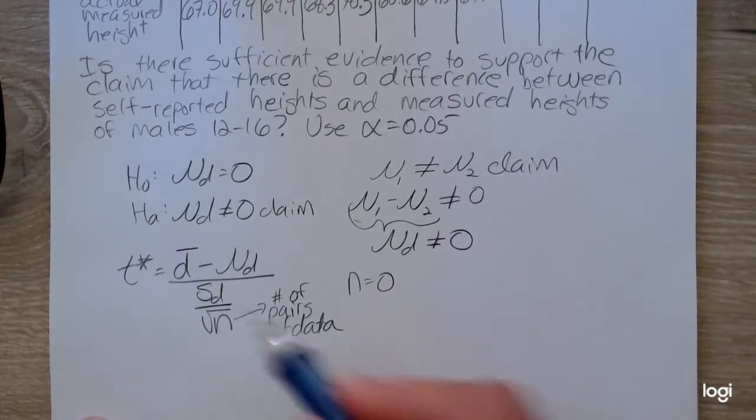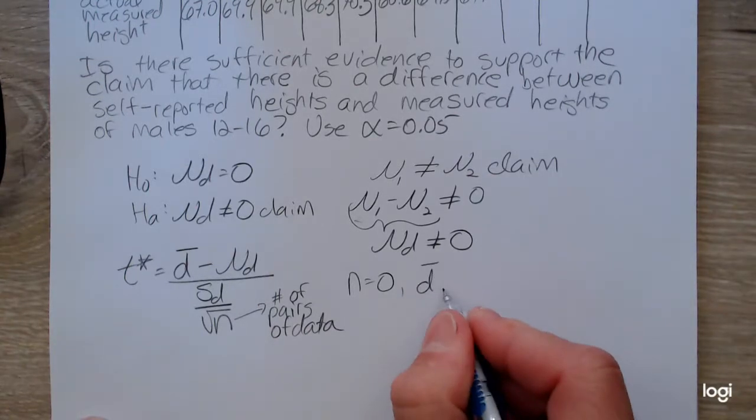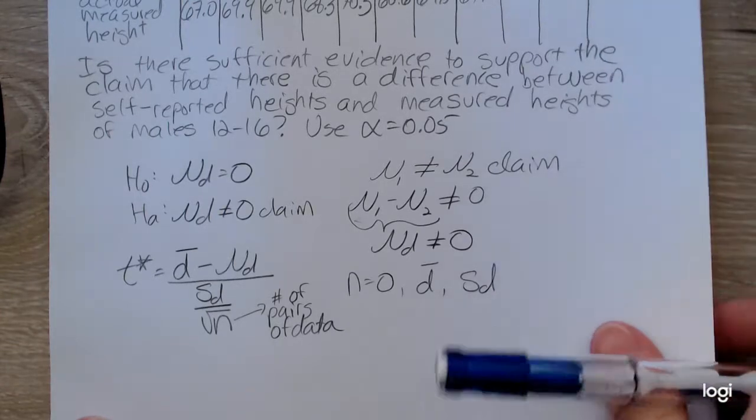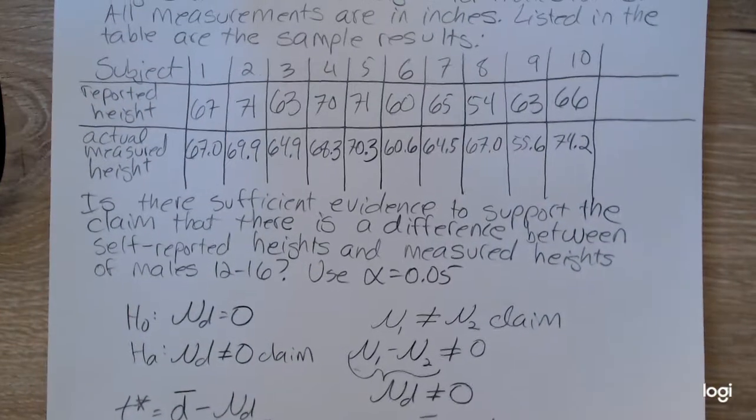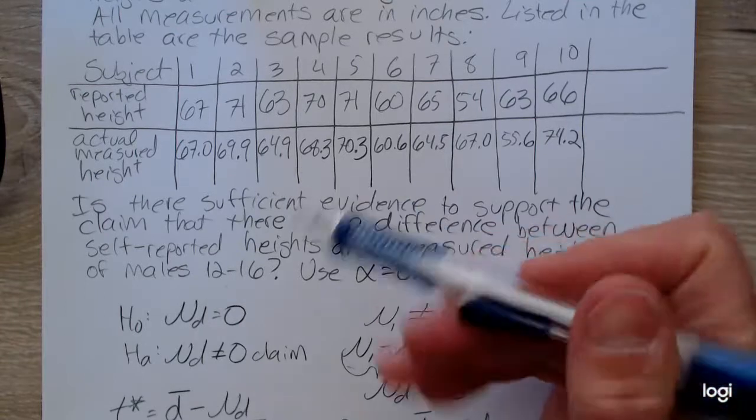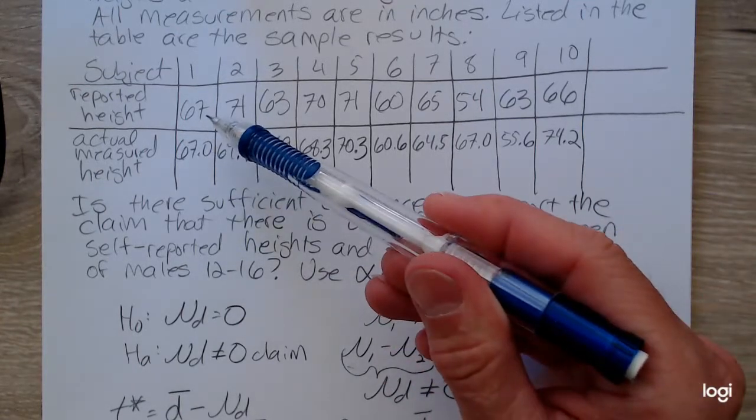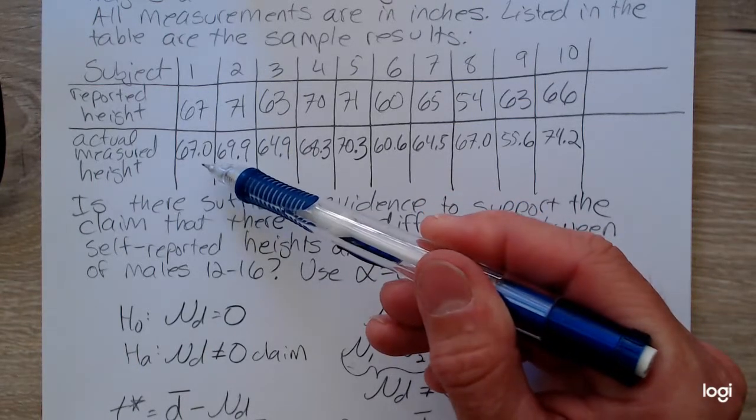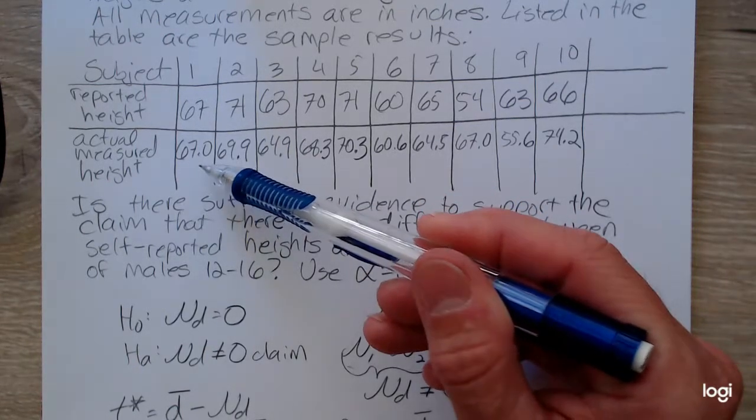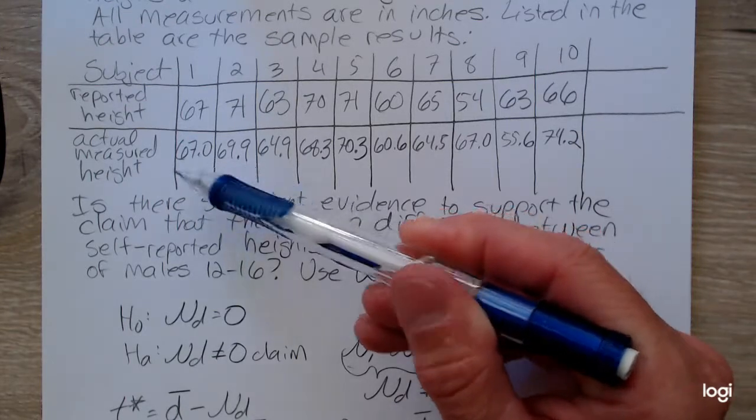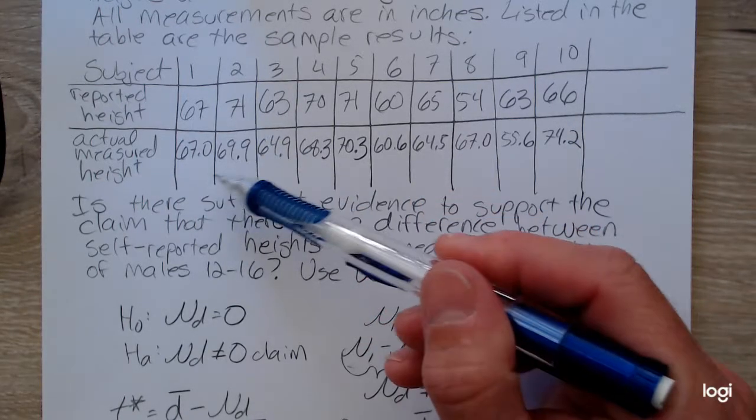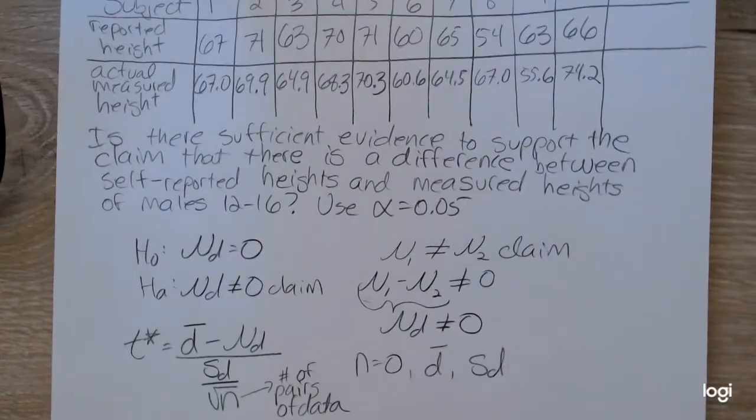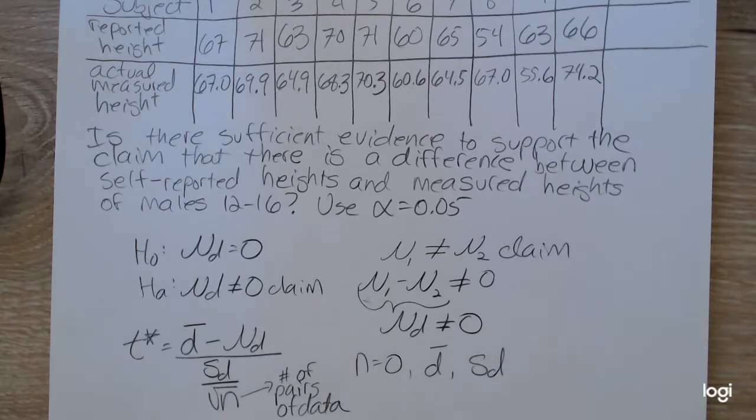For the other pieces, we're going to need d bar and s sub d. I could manually subtract the first row's values and the second row's values, the actual subtracted from the reported, and create a third row of differences. But I'm going to have the calculator do that for me.